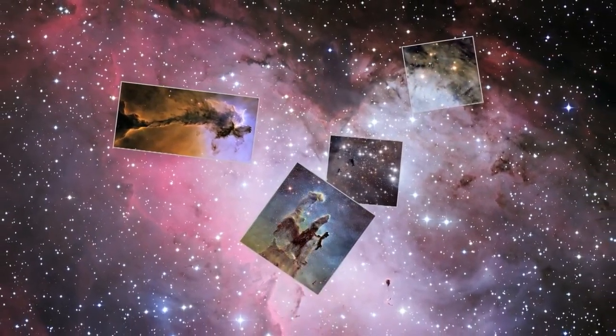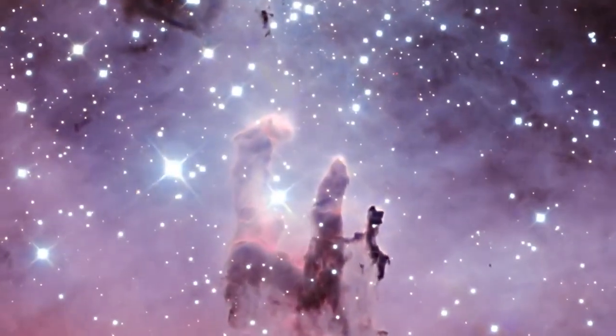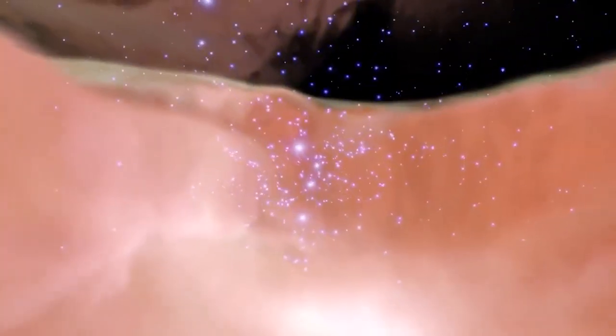When you put the two pictures next to each other, you can see that Webb's camera can see through solid columns of space dust to hundreds of stars that Hubble couldn't see.